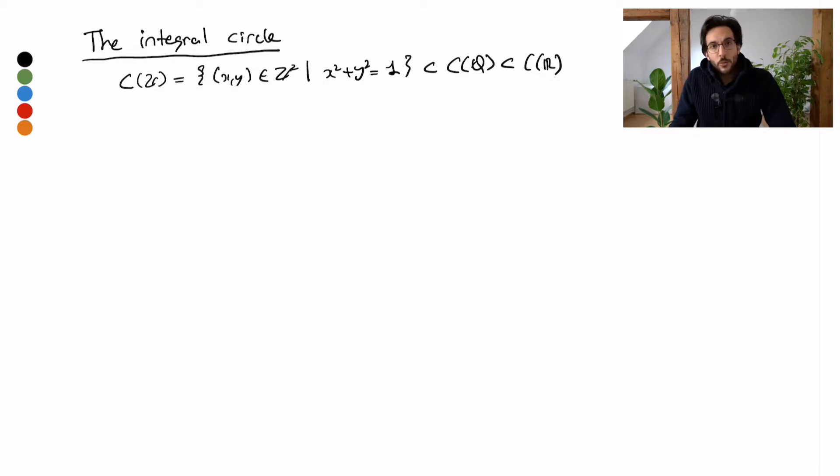Of course in this case it's super easy. We can just find by staring at it that x squared cannot be larger than 1, y squared cannot be larger than 1, and that already gives you all solutions. But you could also put your circle into, well, you could draw your real circle and then see how it intersects the integer lattice.